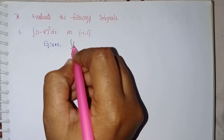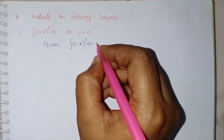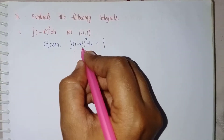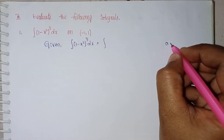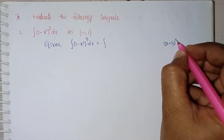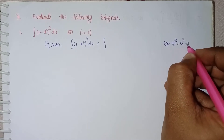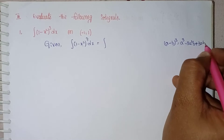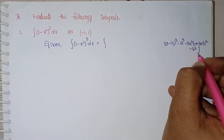The given integral is ∫(1 - x²)³ dx. We use the identity: (a - b)³ = a³ - 3a²b + 3ab² - b³.